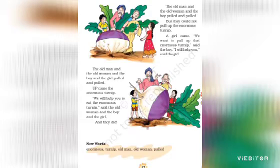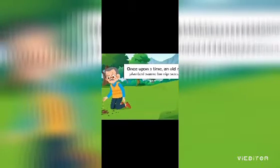Now let's see the summary of The Enormous Turnip. Once upon a time there lived a little old man and a little old woman. The man has a seed. He goes into the garden. He puts the seed in the ground. The seed grows into a turnip. The turnip is big — very, very big. It's enormous. Enormous means very large.